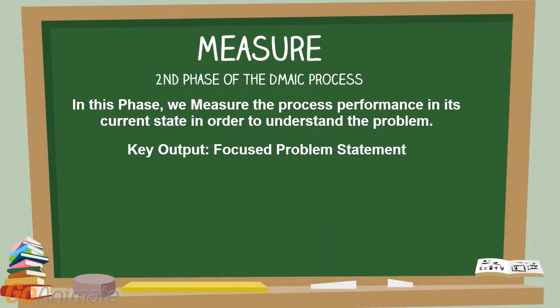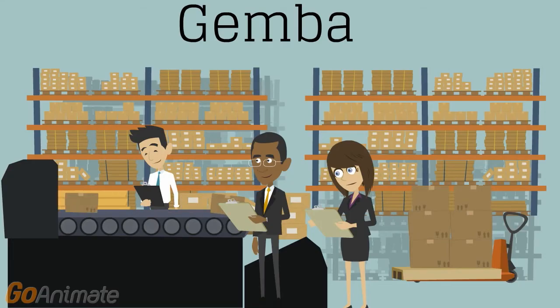In this phase, we measure the process performance in its current state in order to understand the problem. The key output is a focused problem statement. Through data stratification, we are able to determine which areas of the process need to be analyzed in the next phase. The Measure phase is 2–4 weeks in duration.